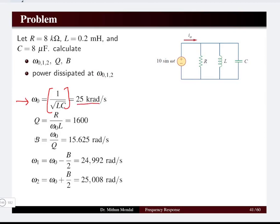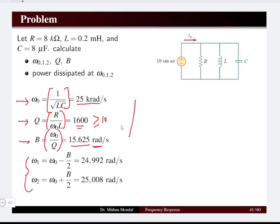The resonant frequency ω0 = 1/√(LC) gives 25 krad/s directly from the components. The quality factor is R/(ω0L), which equals 1600 — far greater than 10, confirming this is a high quality factor circuit. The bandwidth is resonant frequency divided by quality factor, giving 15.625 rad/s. For ω1 and ω2, we subtract and add B/2 to ω0 respectively to get the half-power frequencies, valid for this high-Q circuit.